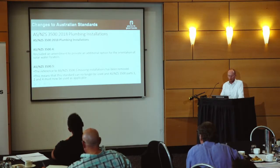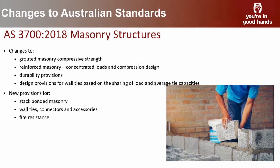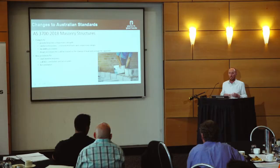The masonry structures standard AS 3700, which is really a first principles design engineering standard, has had some changes around the compressive strength of grouted masonry, concentrated loads, and durability provisions. I want to draw your attention to new provisions allowing for stacked bond masonry — something that HIA had been raising to have deemed-to-satisfy solutions in the code. There's also a new Appendix I added to that standard capturing wall tie connectors, accessories, and corrosion protection requirements that were previously spread over three different standards.